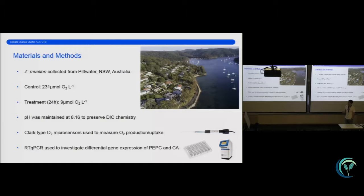So just briefly going over the materials and methods of my work, I collected Zostera muelleri from Pittwater, Australia, which is about two hours north of Sydney. I exposed a group of seagrass to a low oxygen treatment of nine micromoles of oxygen per liter over a period of 24 hours, and I did this by bubbling the water with nitrogen gas. This also had the effect of removing dissolved inorganic carbon, so essentially it was removing all of the bicarbonate and the CO2. And so to mitigate this, we also bubbled CO2 back into the water, and we controlled it by measuring the pH and maintaining the pH at 8.16 within the treatment and the control.